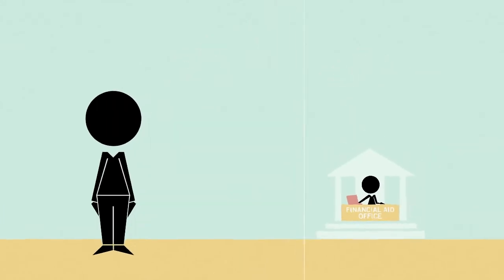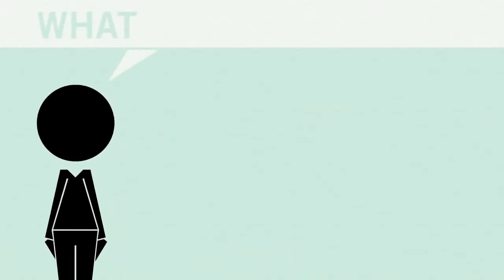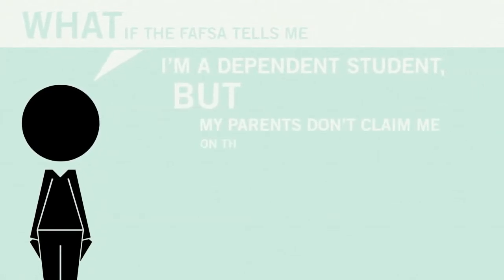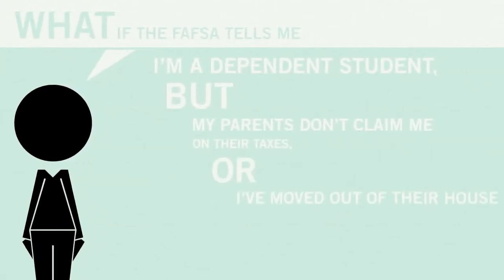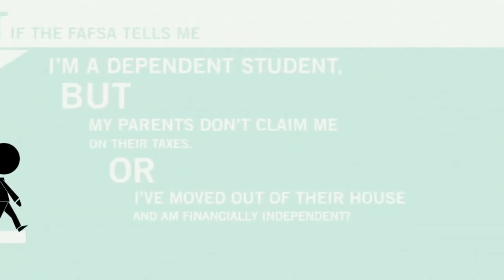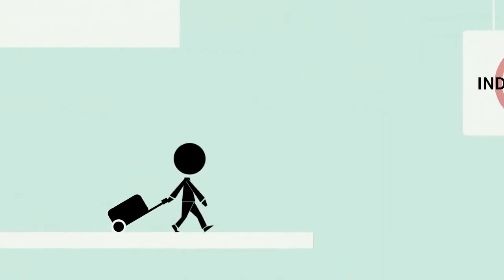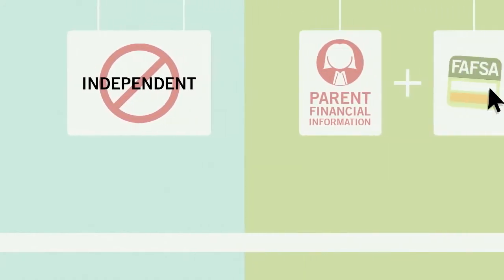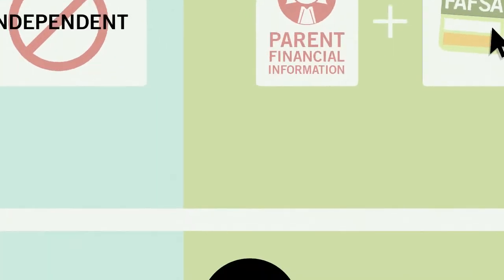Some common questions that people often ask are, what if the FAFSA tells me I'm a dependent student, but my parents don't claim me on their taxes, or I've moved out of their house and am financially independent? While these situations do arise, they aren't part of the criteria for independent status on the FAFSA, so you would still be required to report your parents' financial information on the FAFSA.